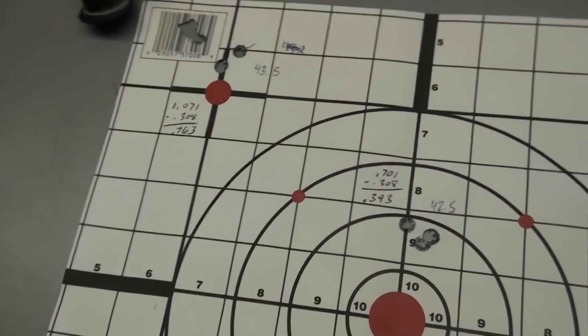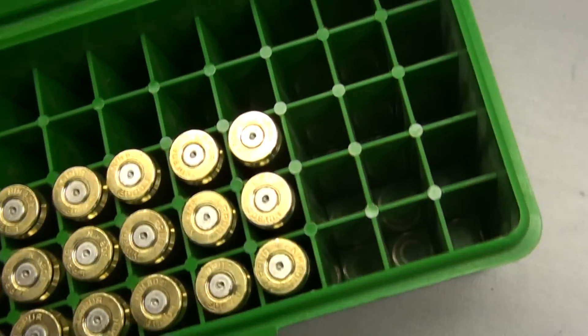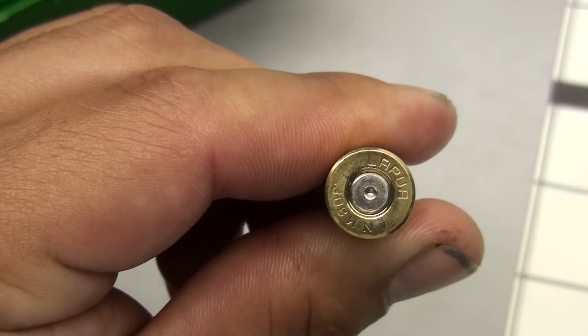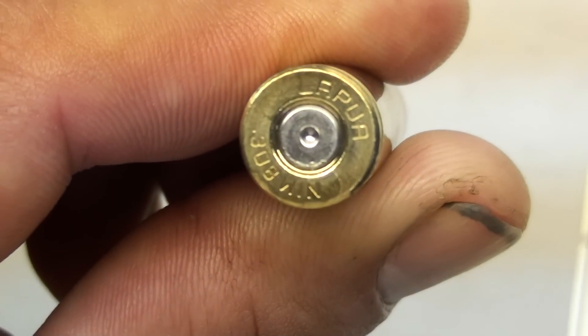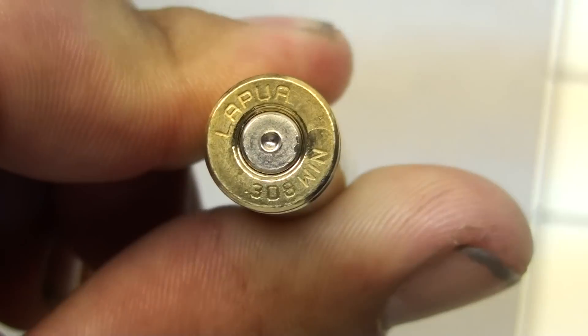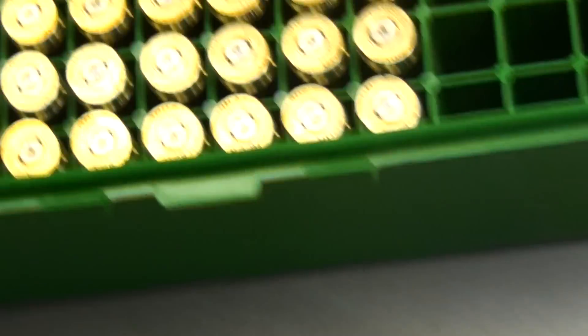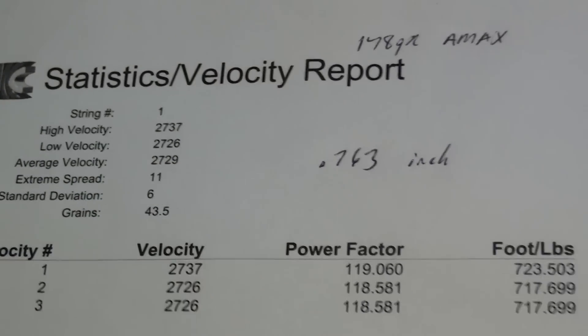I started noticing pressure signs about 43.5 and you can see it by the brass. Let me take one out. You start seeing the ejector marks on it, see it kissing right there. Starting to see pressure signs, see a little imprint. 44 I didn't see any, 43 I definitely did see it and that's pushing about 2730 average speed, which is pretty fast for 178 grain out of a 308.